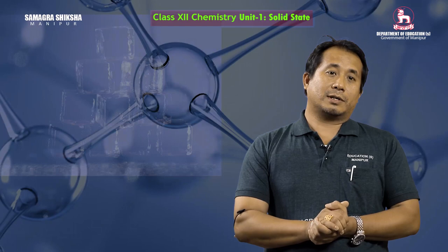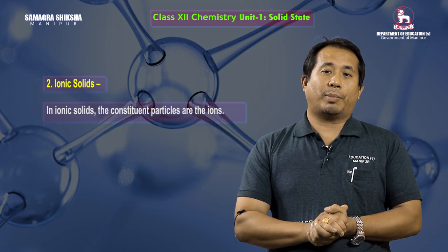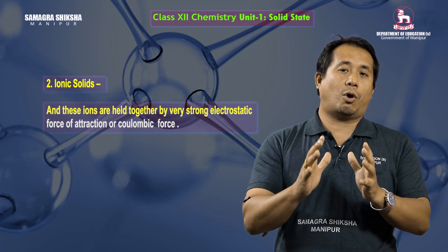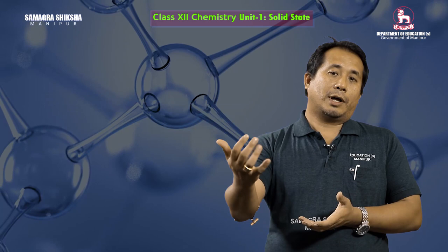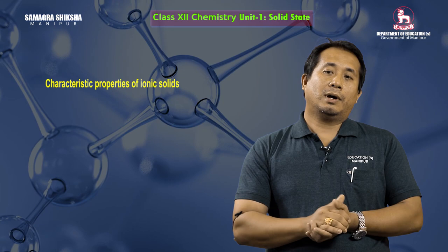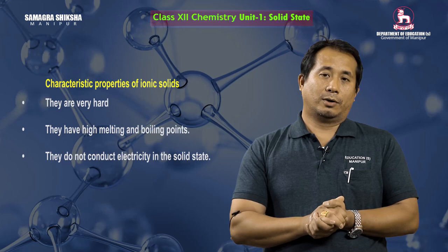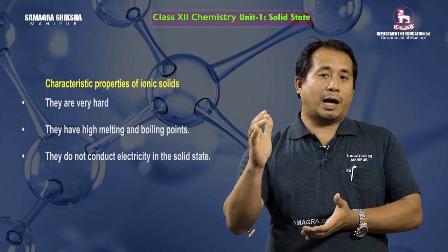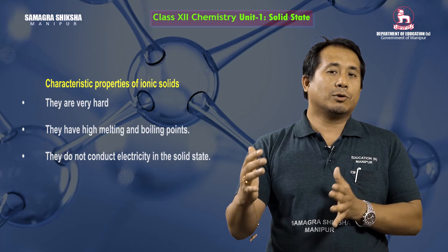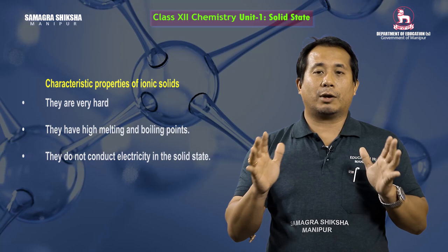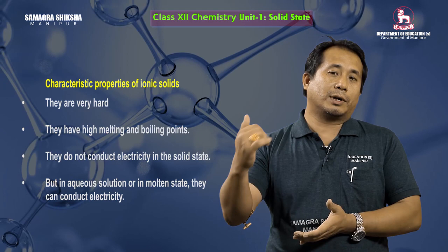The second type of crystalline solid is ionic solid. In ionic solids, the constituent particles are ions. These ions are held together by very strong electrostatic forces of attraction, also called coulombic forces. Ionic solids are very hard, have high melting and boiling points, and do not conduct electricity in the solid state because the ions are held tightly and are not free to move.